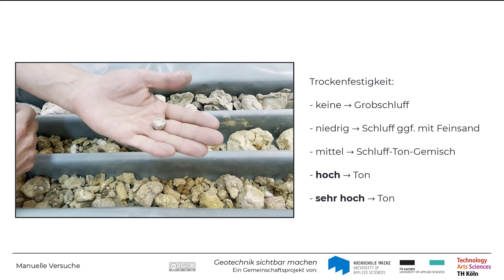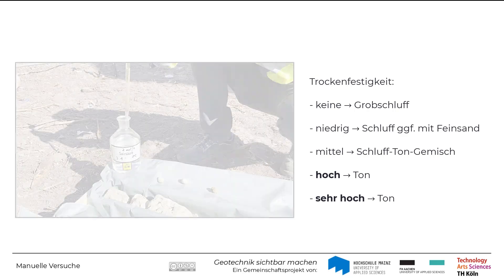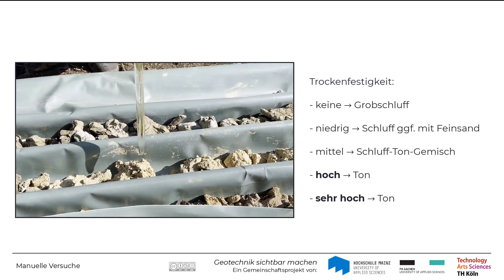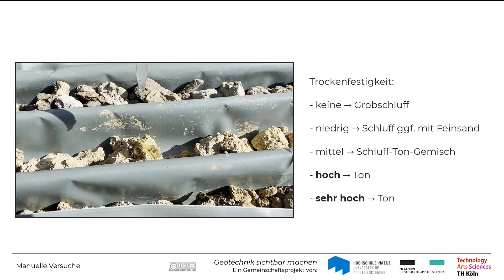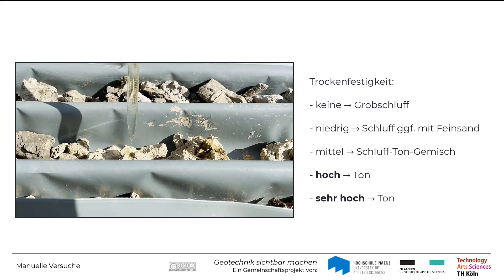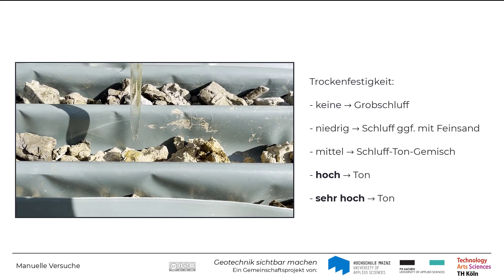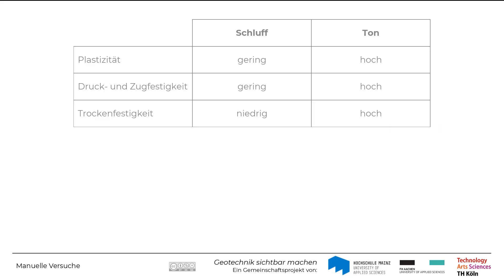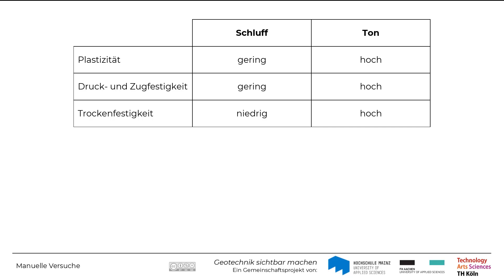Da Calciumcarbonat im Boden zu einer hohen Trockenfestigkeit führt, sollte bei einer hohen Trockenfestigkeit mit verdünnter Salzsäure überprüft werden, ob Calciumcarbonat in der Probe vorhanden ist oder nicht. Das Aufbrausen als Reaktion des Bodens mit der Salzsäure, das Sie hier im Video sehen, deutet auf das Vorhandensein von Calciumcarbonat hin. Eine niedrige Trockenfestigkeit ist also ein Hinweis auf Schluff, während eine hohe Trockenfestigkeit, die nicht auf Calciumcarbonat zurückzuführen ist, für einen Ton spricht.